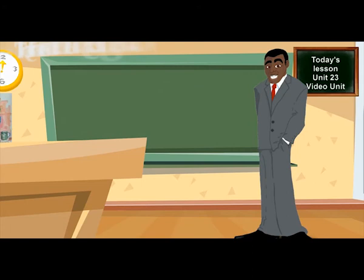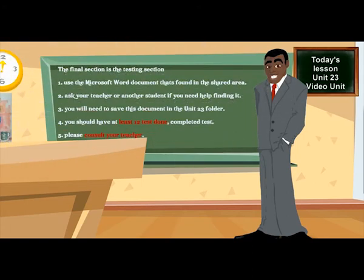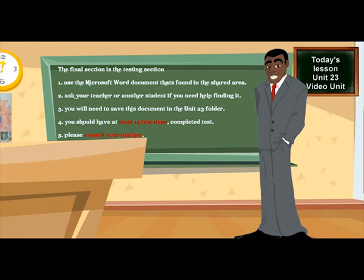The final section is the testing section. In this section, you will need to use the Word document that's in the shared area. Ask your teacher or another student to show you where it is. You will need to save this document in your Unit 23 folder. In this document, you should have at least 12 completed tests done. Please consult your teacher to make sure that's the number that they want.